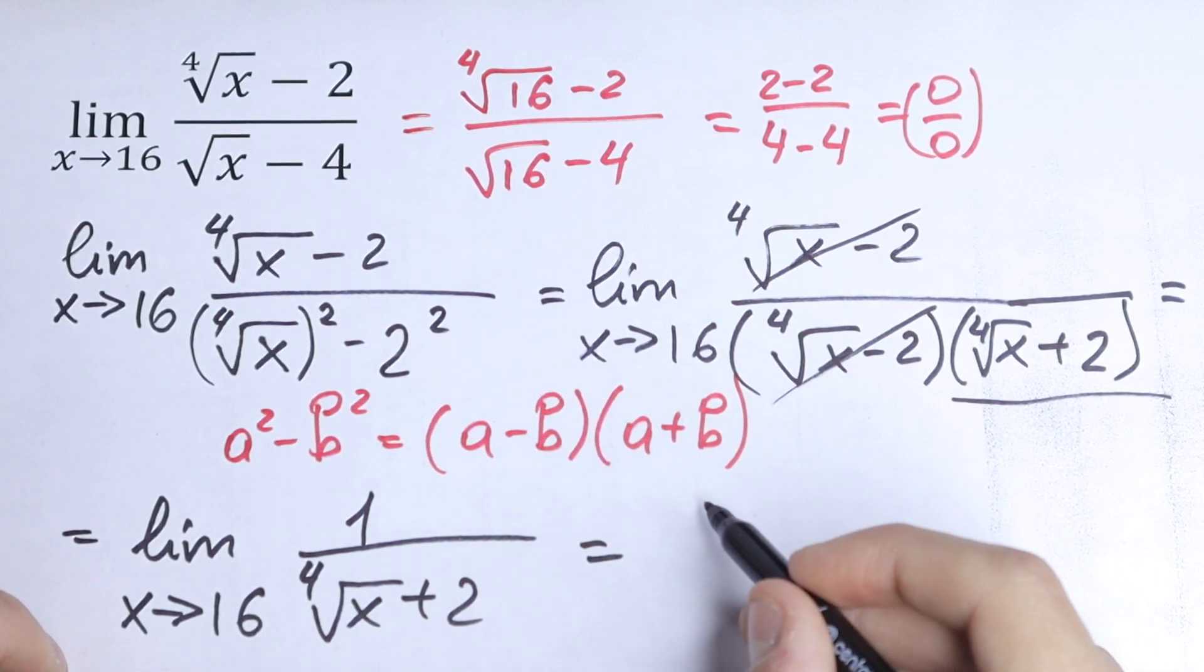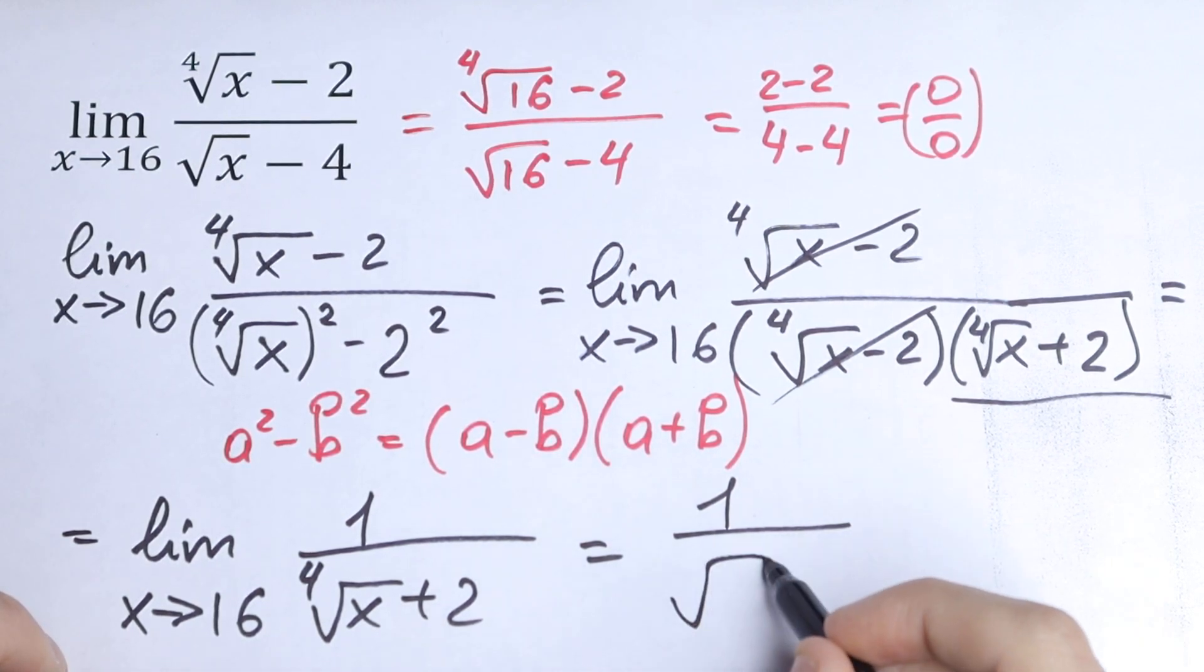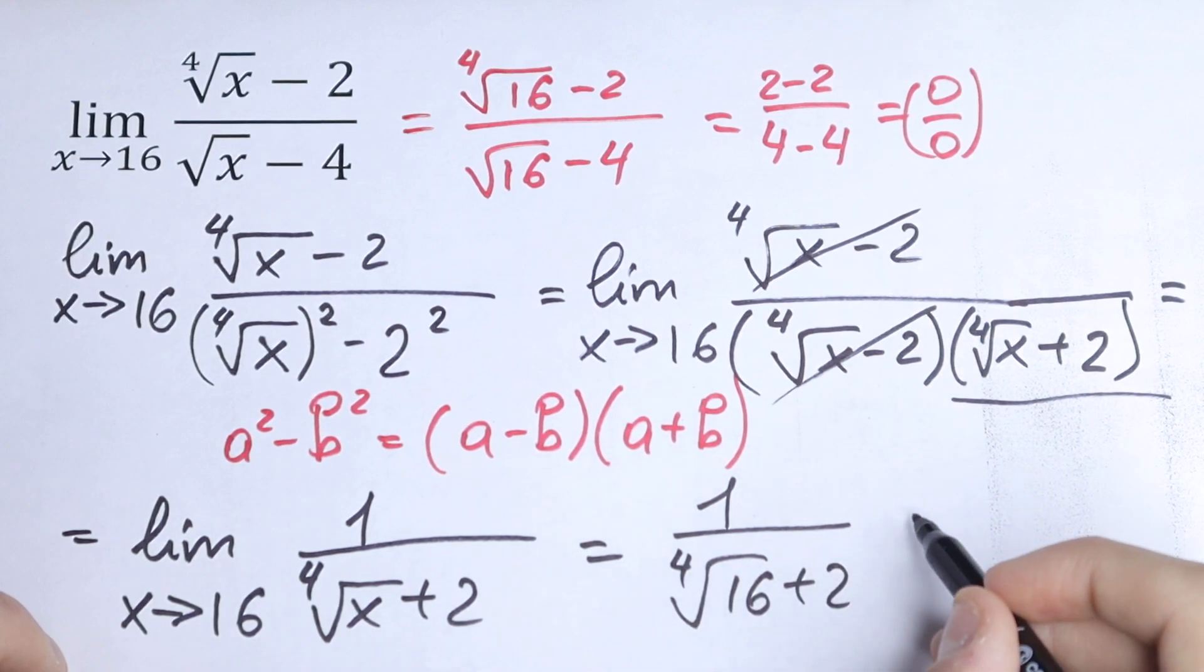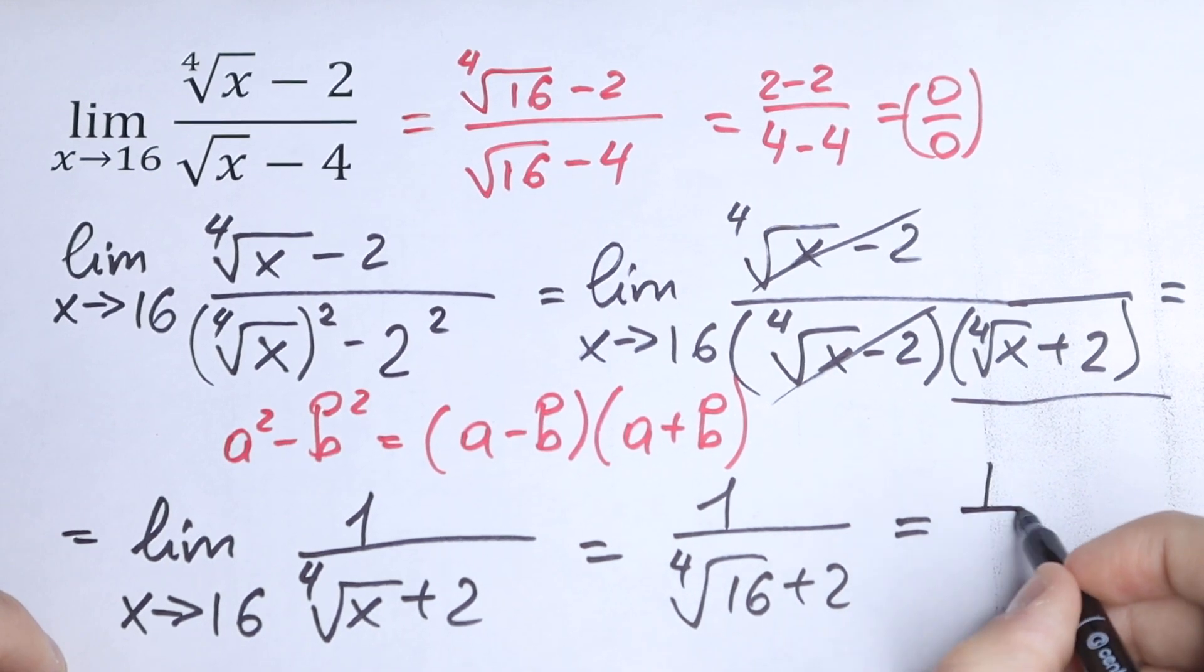As a result we will have 1 over fourth root of 16 plus 2. This will be equal to 1 over 4.